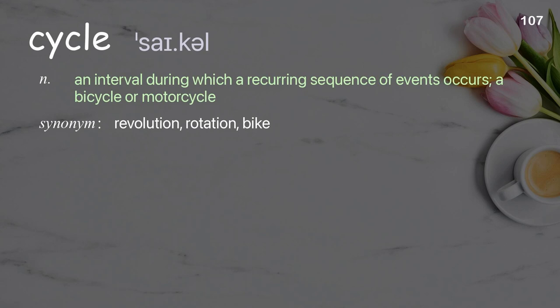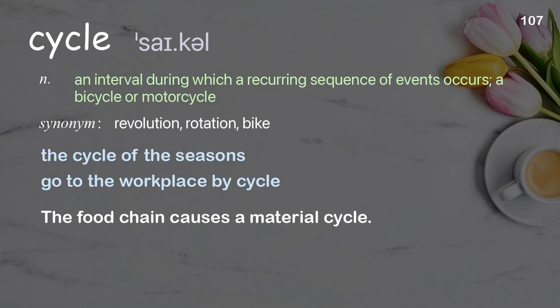Cycle: an interval during which a recurring sequence of events occurs; a bicycle or motorcycle. Examples: the cycle of the seasons, go to the workplace by cycle. The food chain causes a material cycle.